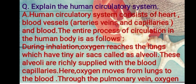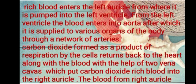Oxygen moves from the lungs to the blood through the pulmonary vein. Oxygen-rich blood enters the left auricle, from where it is pumped into the left ventricle. From the left ventricle, blood enters the aorta, also called the mother artery, after which it is supplied to various organs of the body through a network of arteries. Carbon dioxide formed as a product of respiration by the cells returns back to the heart along with the blood.